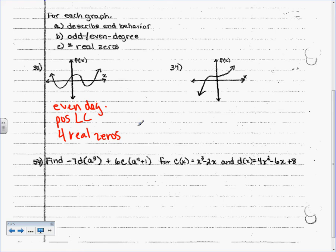What direction are the ends going in? Opposite — therefore this is odd. Odd degree. Would it be a positive or a negative LC? Positive. How many real zeros? One. That's the only new thing today — everything else is old.